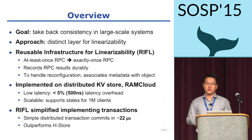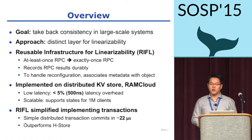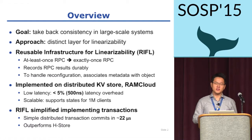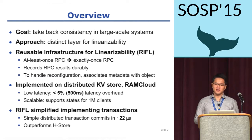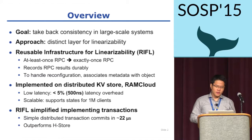Systems have given up strong consistency for scalability. The previous talk tackled this problem by implementing distributed transactions with high performance and scalability. Now, I will talk about another approach to solve the same problem. We suggest a distinct layer for linearizability as a solution for achieving strong consistency without impacting performance and scalability of today's systems. We designed a reusable infrastructure for linearizability, which we call RIFO in short. RIFO changes at-least-once RPCs to exactly-once RPCs by saving RPC results and avoiding re-executions.